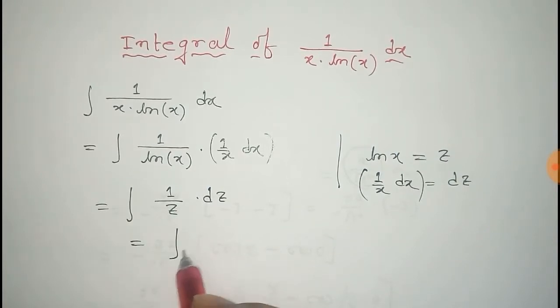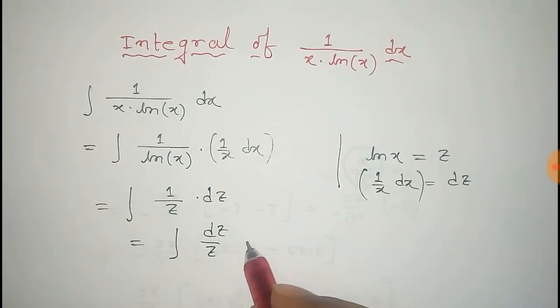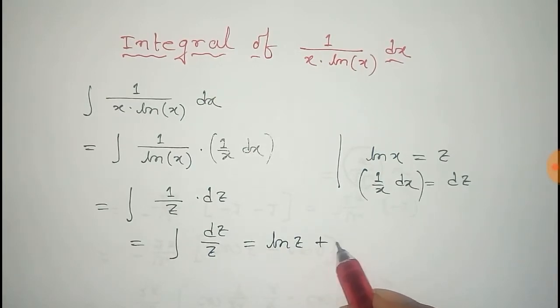Now that is equals to integral dz by z. Obviously the integral of dz by z is log z plus a constant of integration that is c.